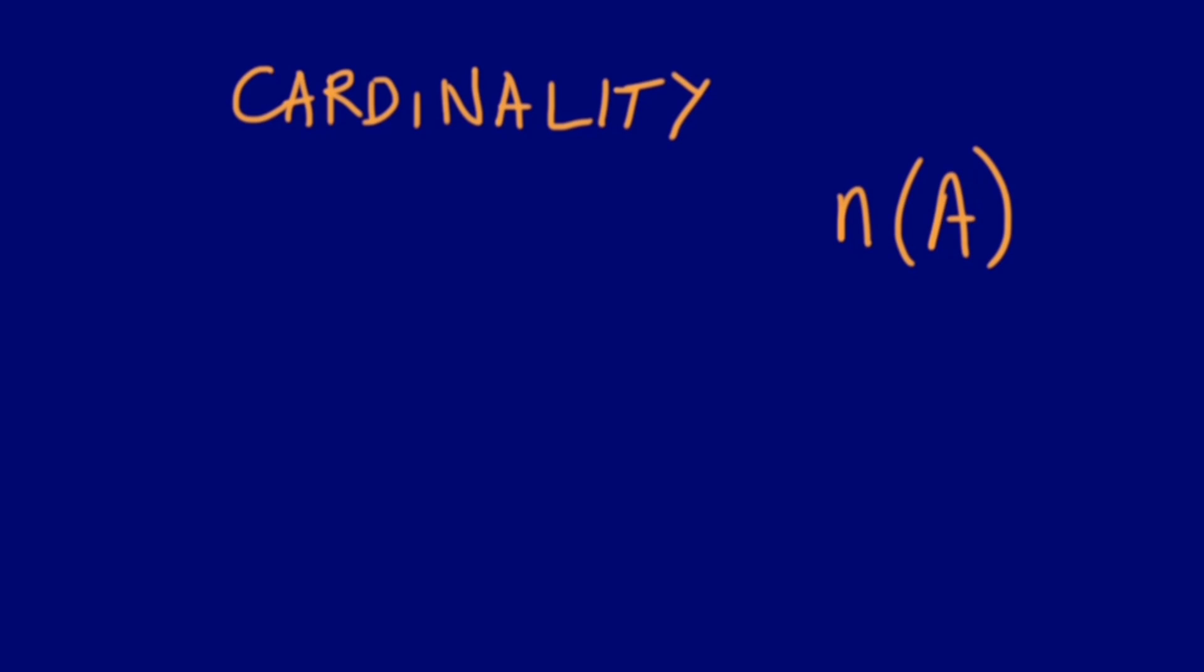Since we're talking about the number of elements in a set, we also have the cardinality of a set. The cardinality of a set A, represented by n(A), is the total number of its elements. In our example, we have set A. The cardinality of this set is one, two, three, four, and five. Therefore its cardinality is five.